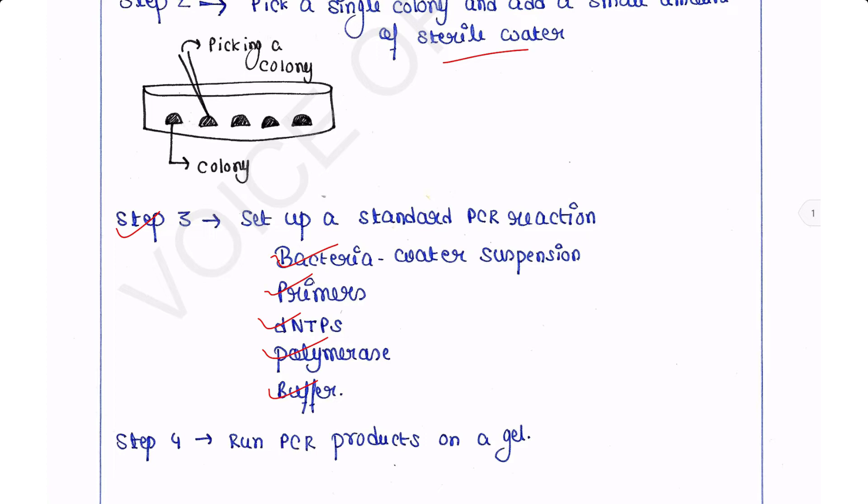high temperature will help to lyse the bacterial cell and plasmid DNA will come out of the cell into the PCR solution. So there is no need to isolate plasmid from the bacterial cell before undergoing the PCR. That will save your time.